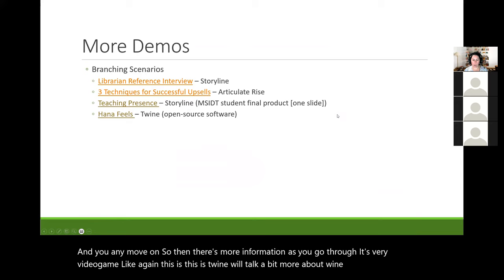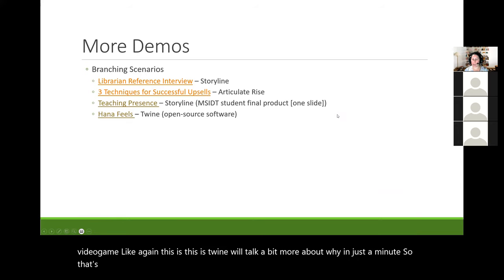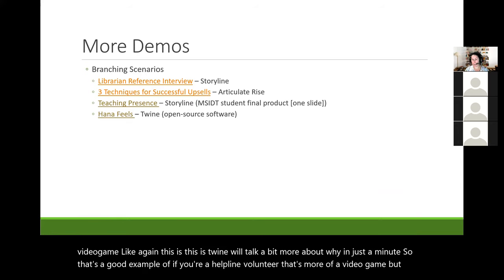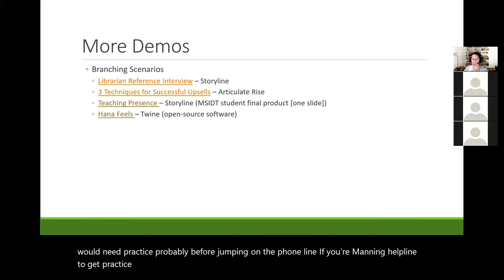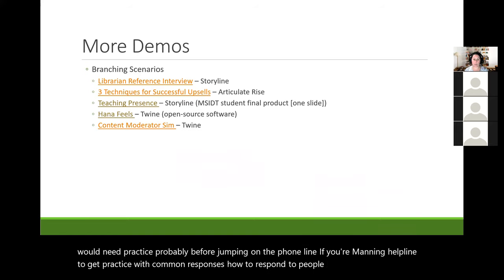Here's an interesting one called Hannah Feels, built using Twine — open source branching scenario software people use to build scenarios and little games. In this one, you are someone volunteering at a helpline. There's just text on screen — here's what you're saying, here's what the person on the other end is saying, and you have three options to respond. It's very video-game-like: you choose what you want to say and see what happens. It's a really good scenario that offers consequences for your choices without a sudden point where everything ends — different ways to navigate through. This is great practice if you're manning a helpline — practicing common responses, how to respond to people, how to keep them on the line.